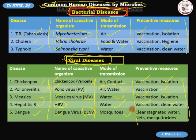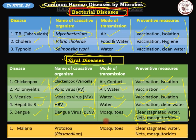The mode of transmission for dengue is mosquitoes. Preventive measures include clearing stagnated water around your house and dwellings, always using mosquito nets when you sleep, or using mosquito repellents, which are available plenty in the market.